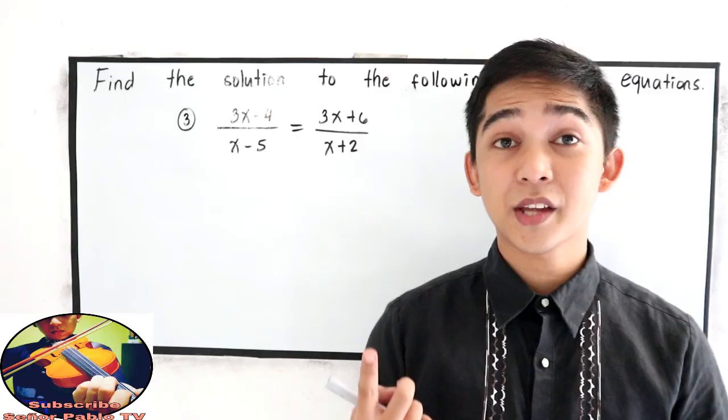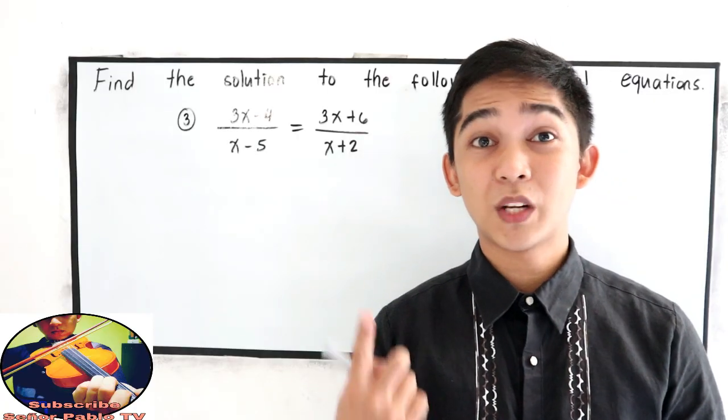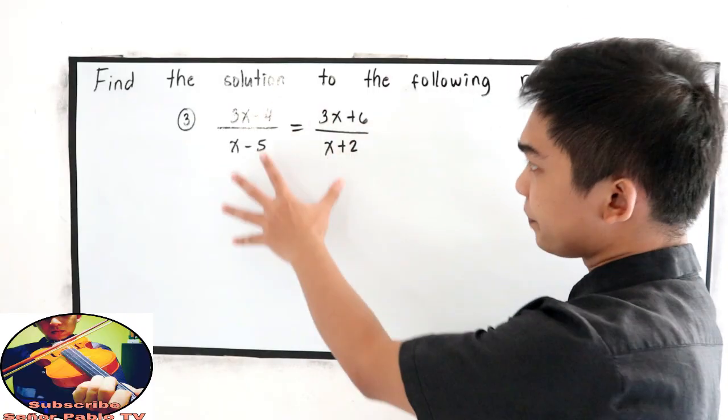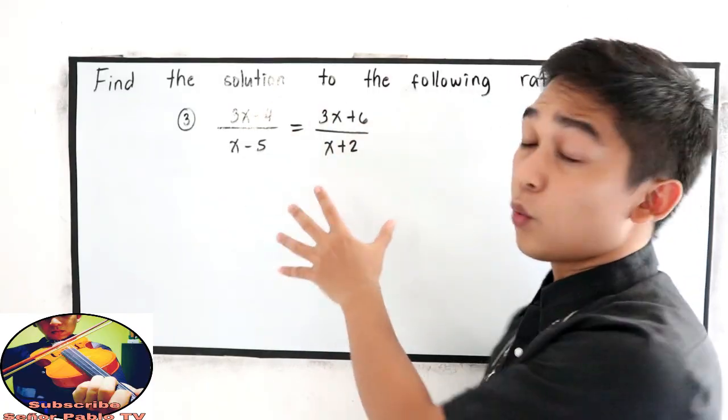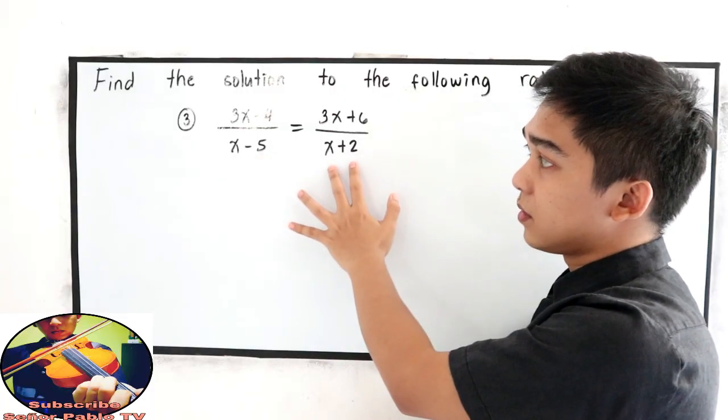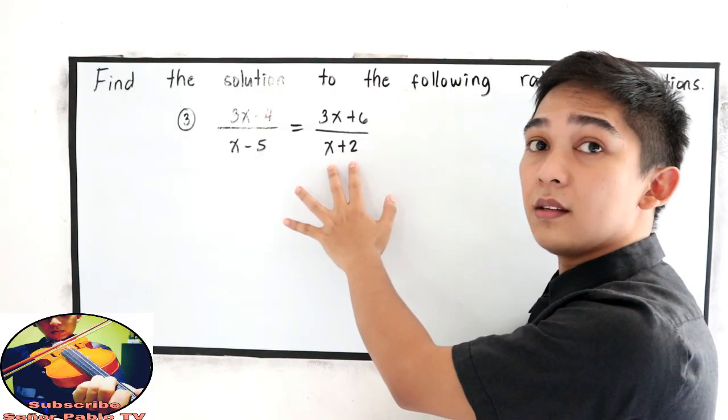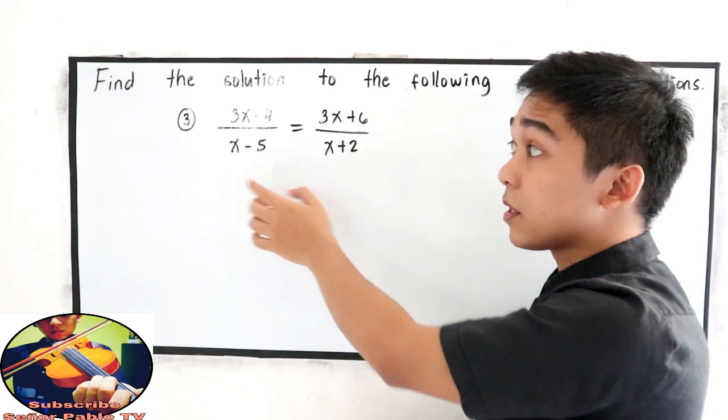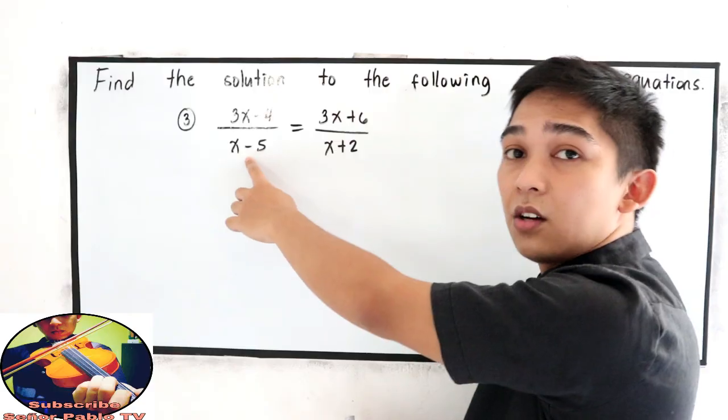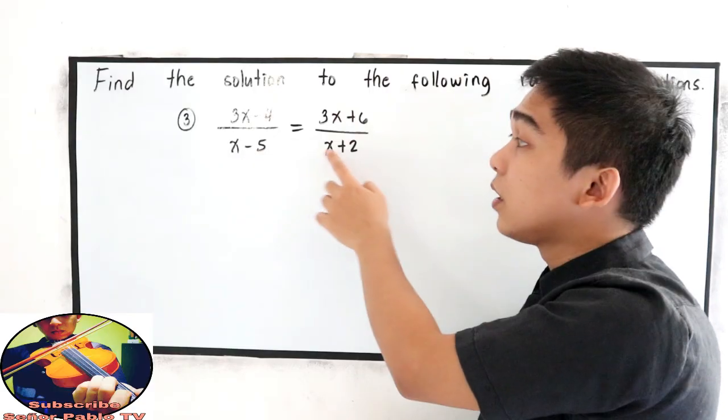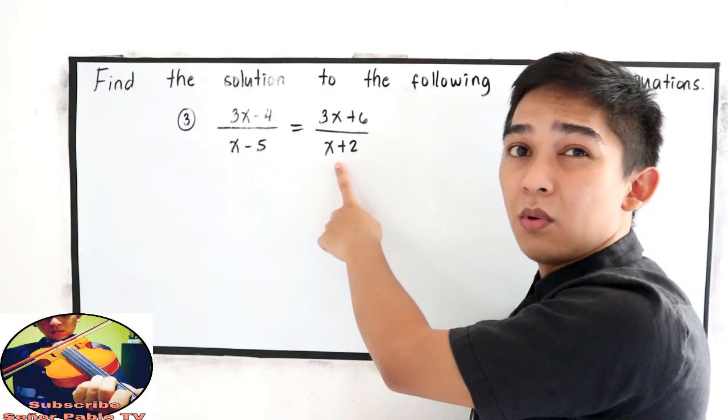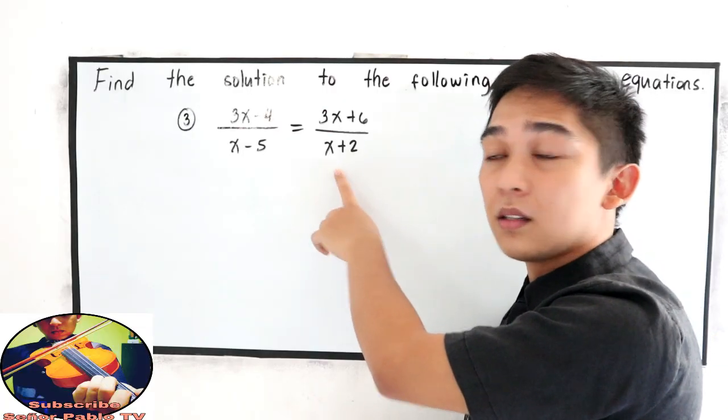So our first step, we need to cross multiply. But before doing our equation, look at our denominator. Our domain, or the values for x, must not be equal to 5 on the left side of the equation. And on the right side, x must not be equal to 2 because that will give us undefined.